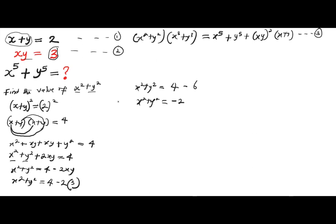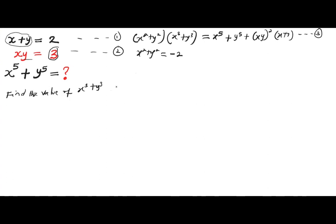Let's copy the value of x² + y² = −2 somewhere safe on the board. In our next step we need to find the value of x³ + y³, because we needed both x² + y² and x³ + y³ in order to find x⁵ + y⁵.